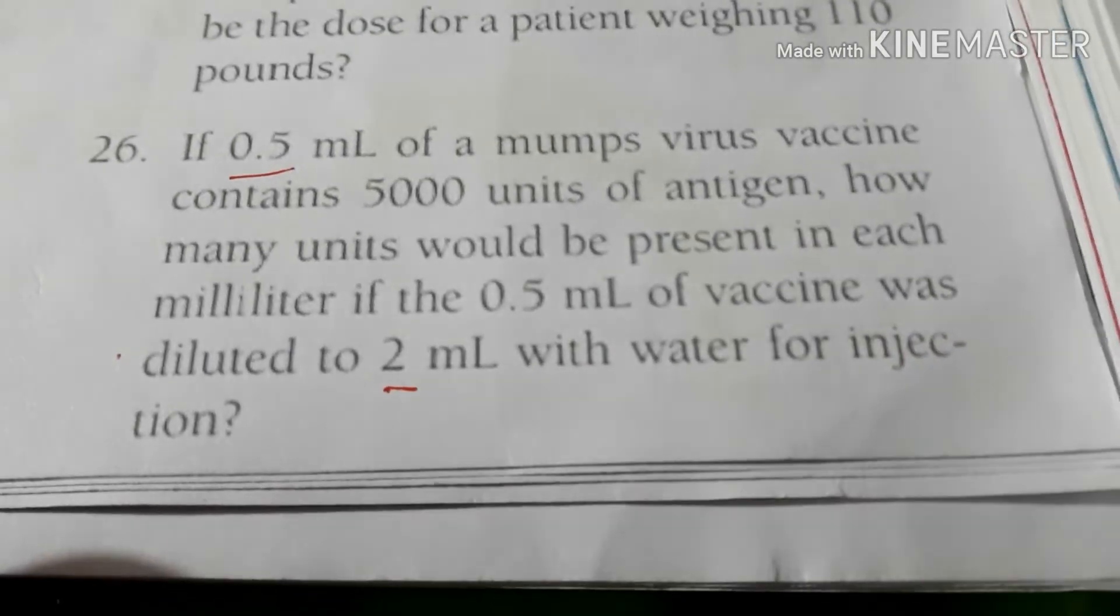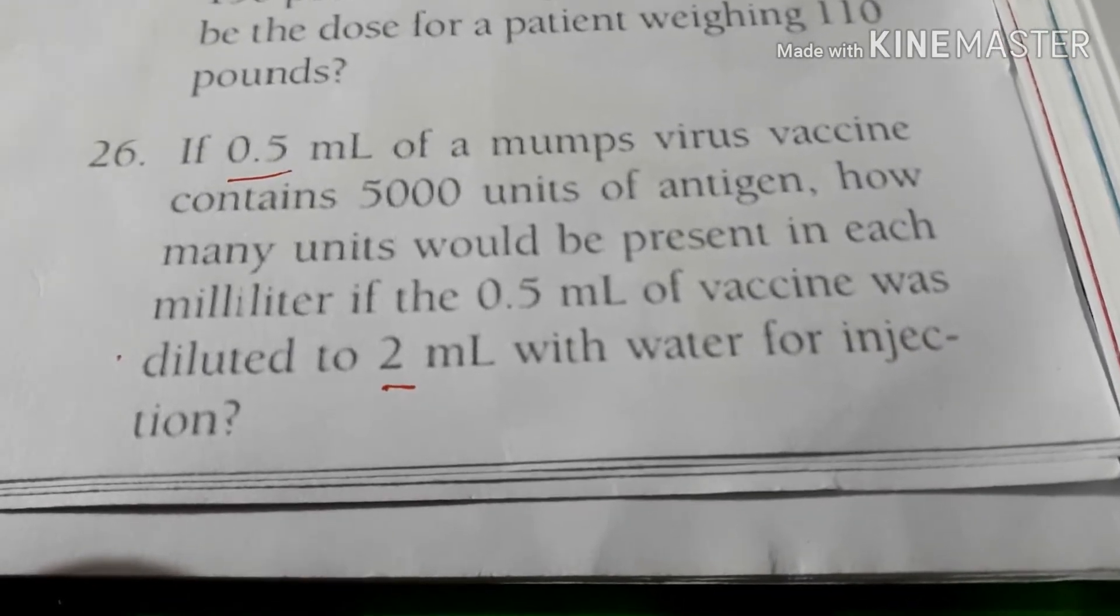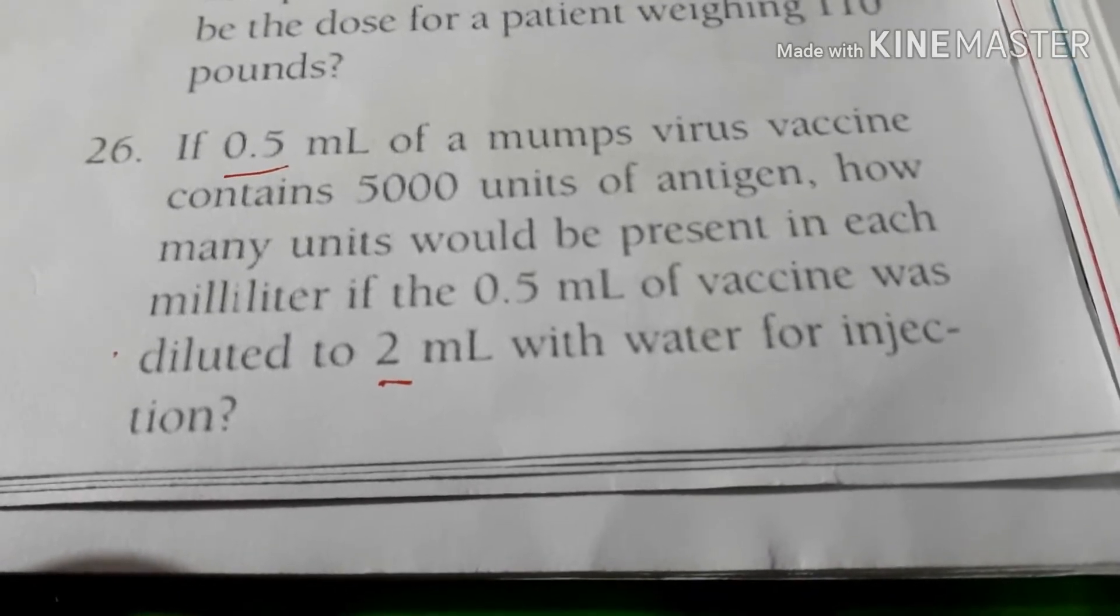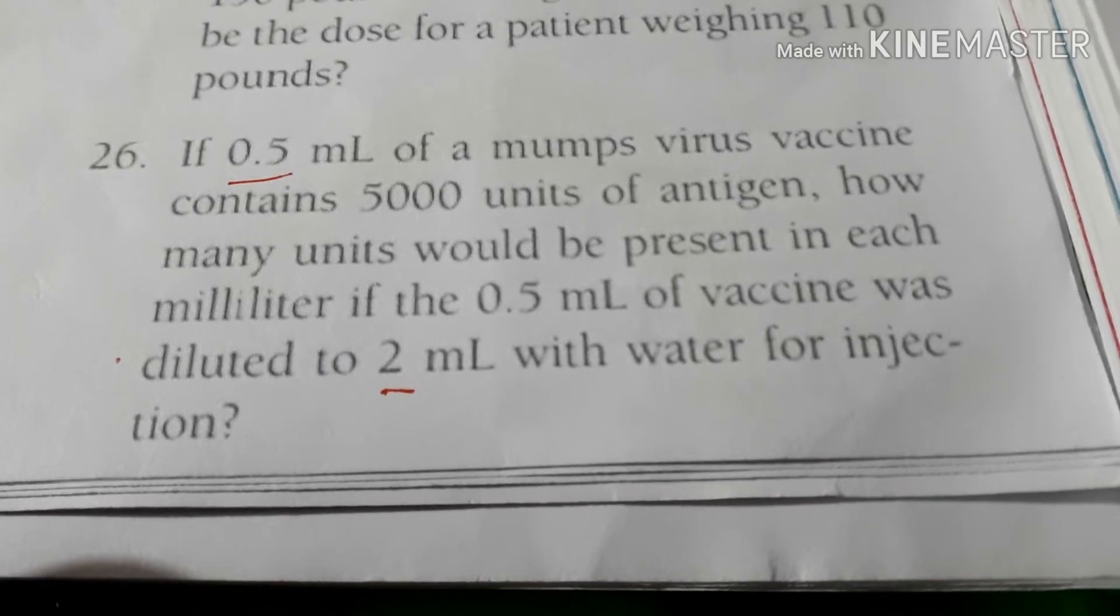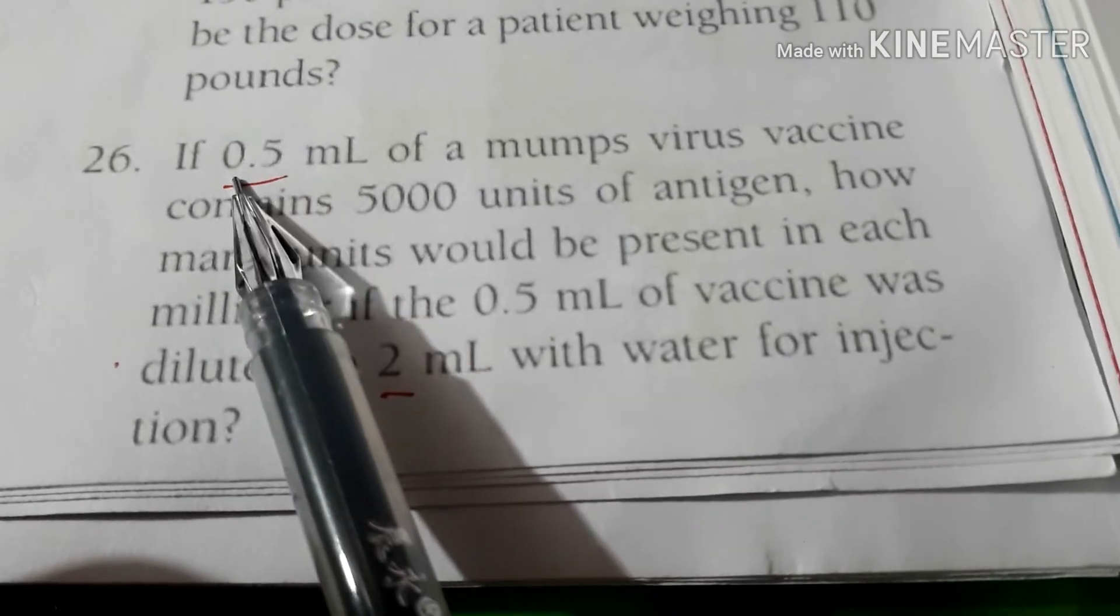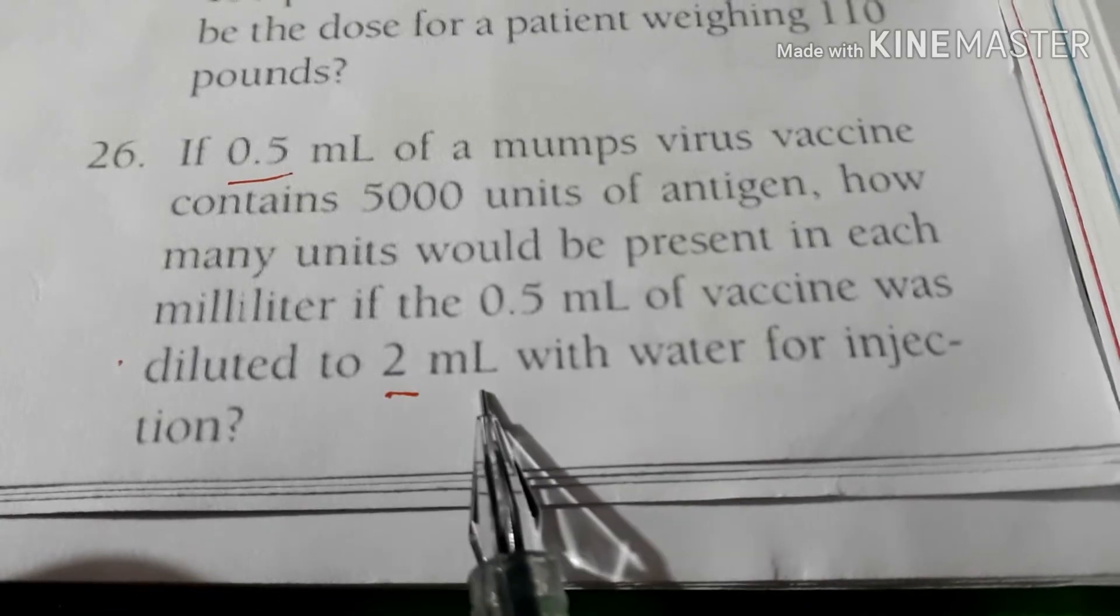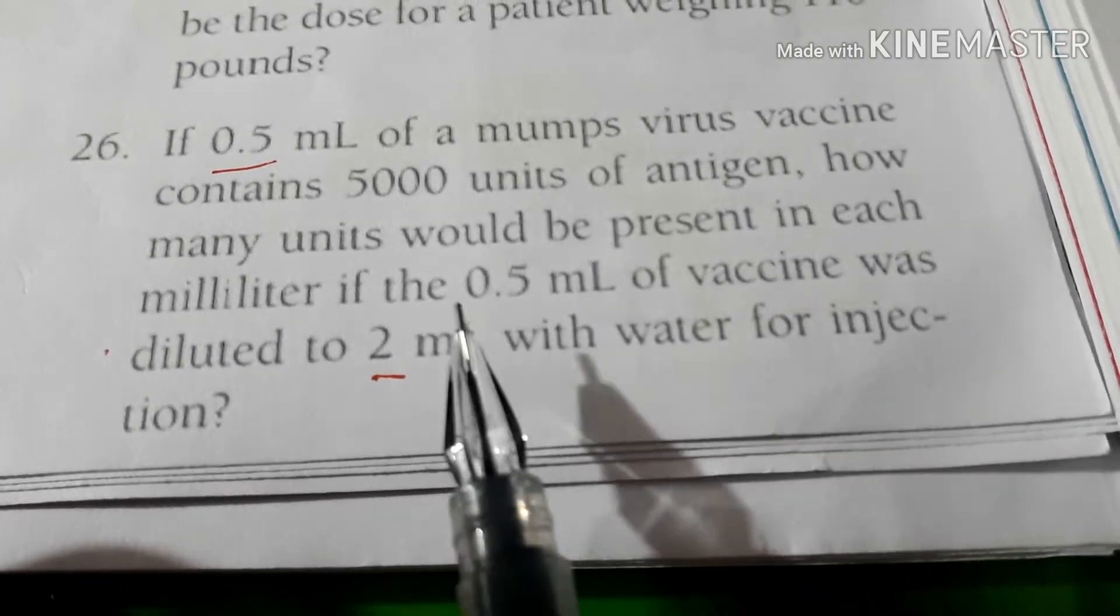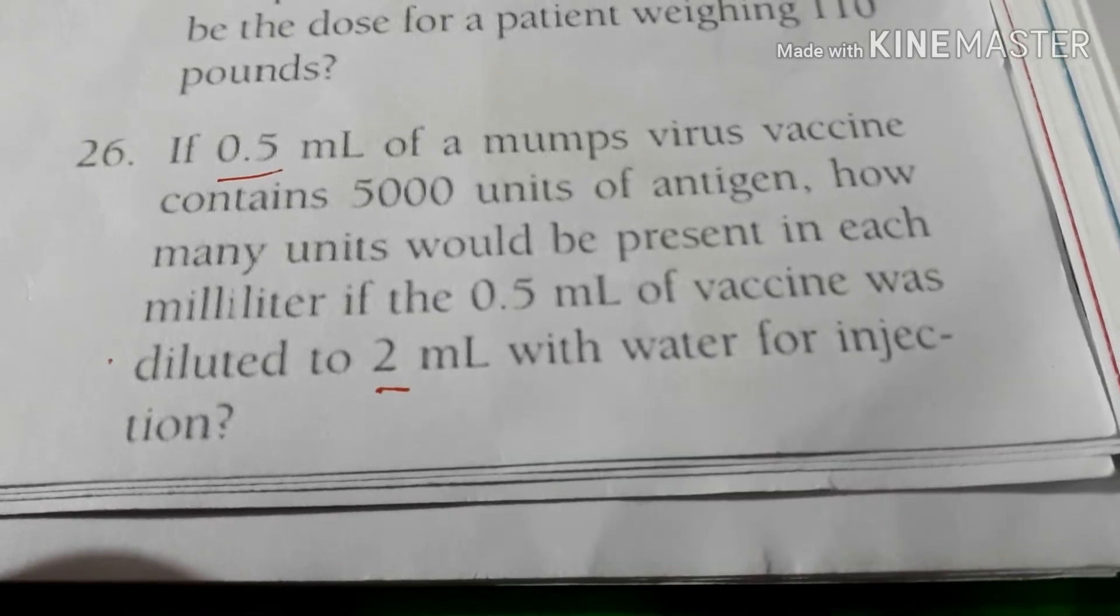اللقاح ضد مرض النكاف يحتوي على 5000 mumps in each milliliter of 0.5 milliliter. The 0.5 milliliter will be diluted to 2 milliliters with water for injection. How many of the antigen will be present in each milliliter of vaccine?